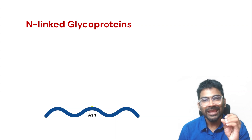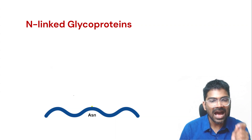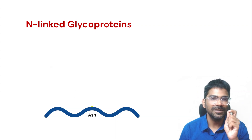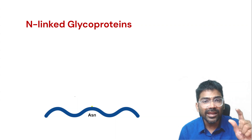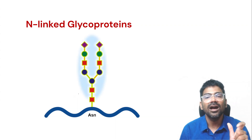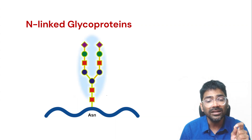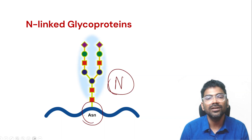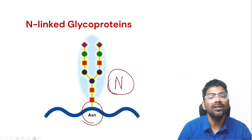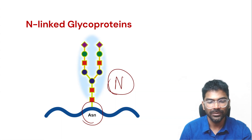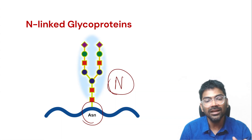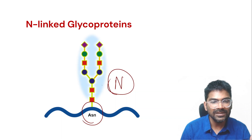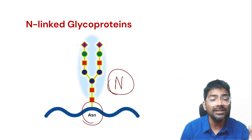In N-linked glycoproteins, as the name suggests, the oligosaccharide side chains are attached to the nitrogen — specifically the amide nitrogen of asparagine — of the protein. As you can see, the oligosaccharide is short and branched.